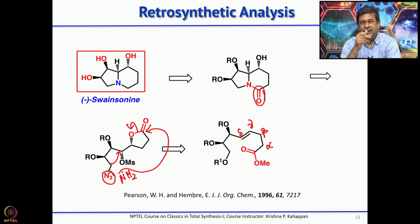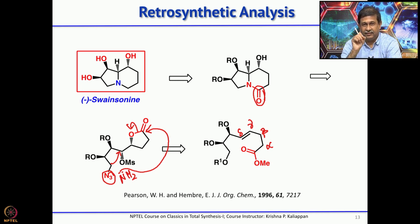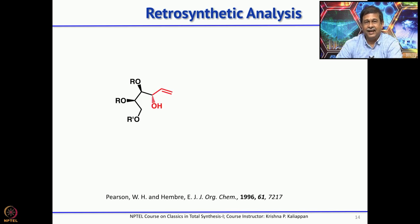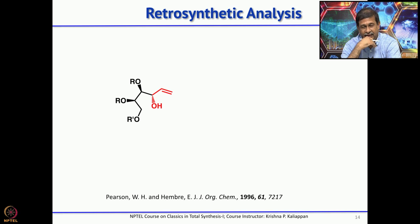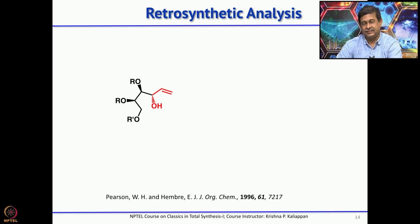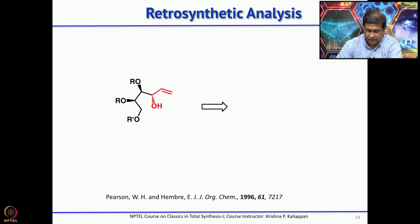This gamma-delta unsaturated ester can be easily obtained from the corresponding allylic alcohol through a Johnson-Claisen rearrangement. So the precursor is this allylic alcohol: once you have it, it can undergo intramolecular Johnson-Claisen rearrangement to give the gamma-delta unsaturated ester. This can be easily obtained from D-erythrose, which is commercially available.